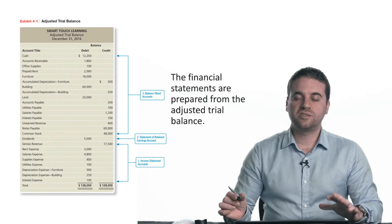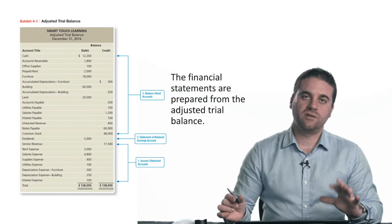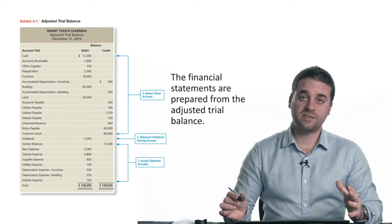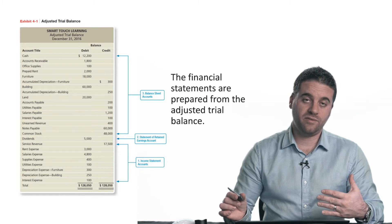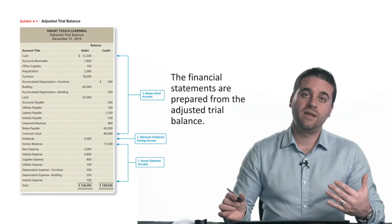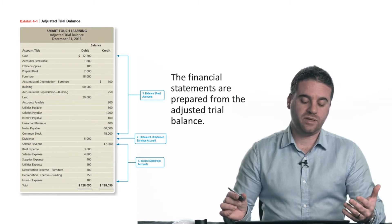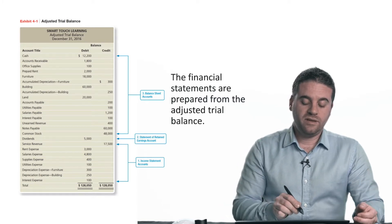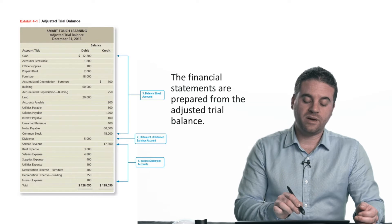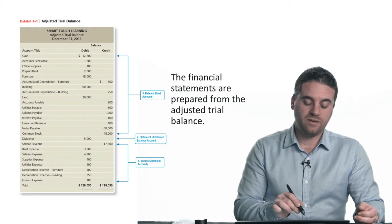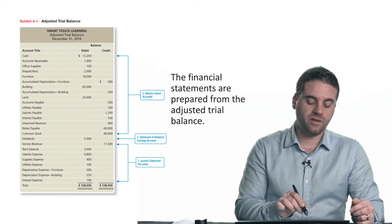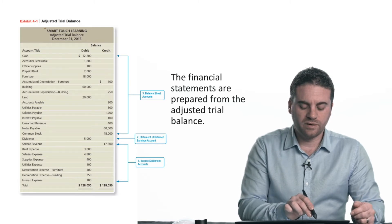The adjusted trial balance is the only resource for preparing those three statements, because the adjusted trial balance has each and every account that we need. Here's the adjusted trial balance — I pulled that from your textbook, so if it's not clear enough, you can always look back. It's Exhibit 4.1 from Chapter 4.